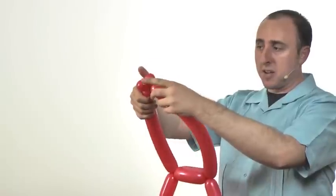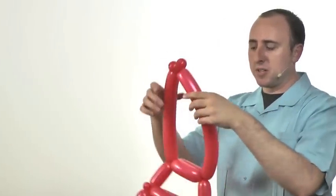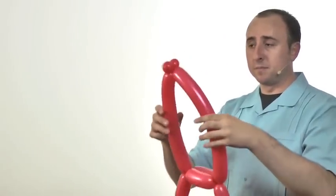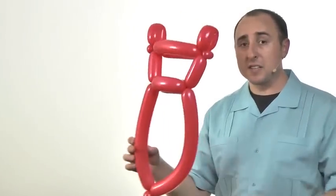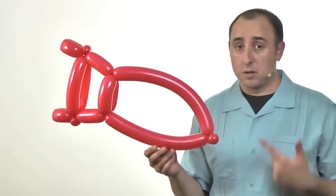But I would highly recommend you take one of the bubbles, thread it through on the other side, give it a twist. Keeps it from coming undone. And that's a guitar body. I know it doesn't look much like a guitar body yet, but hold on we're not done.